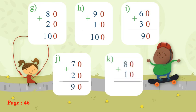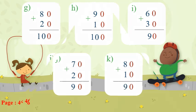Number K: 80 plus 10. Zero plus zero equals zero. Eight plus one — eight on my mind, one on my hand — after eight: nine. The answer will be ninety.